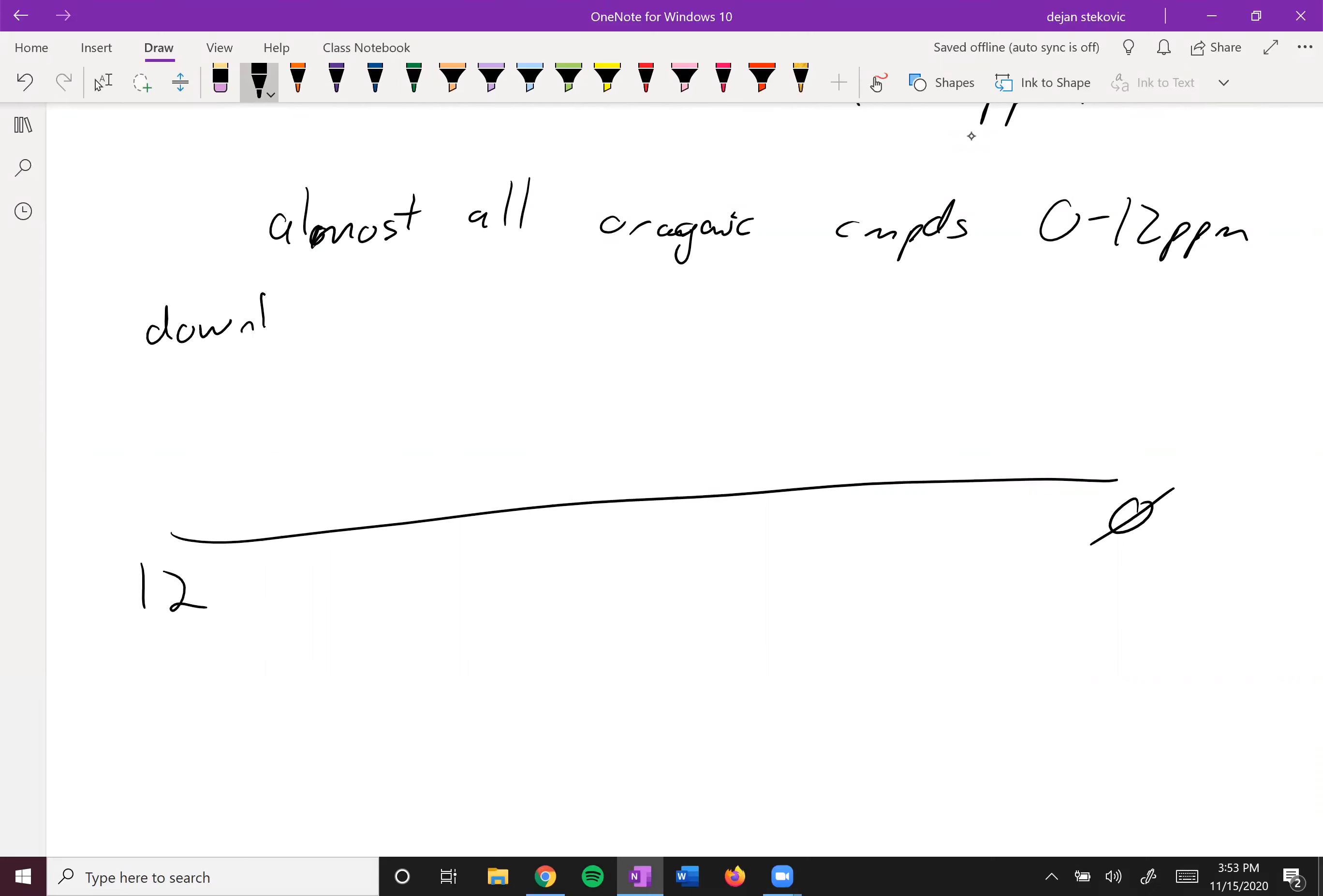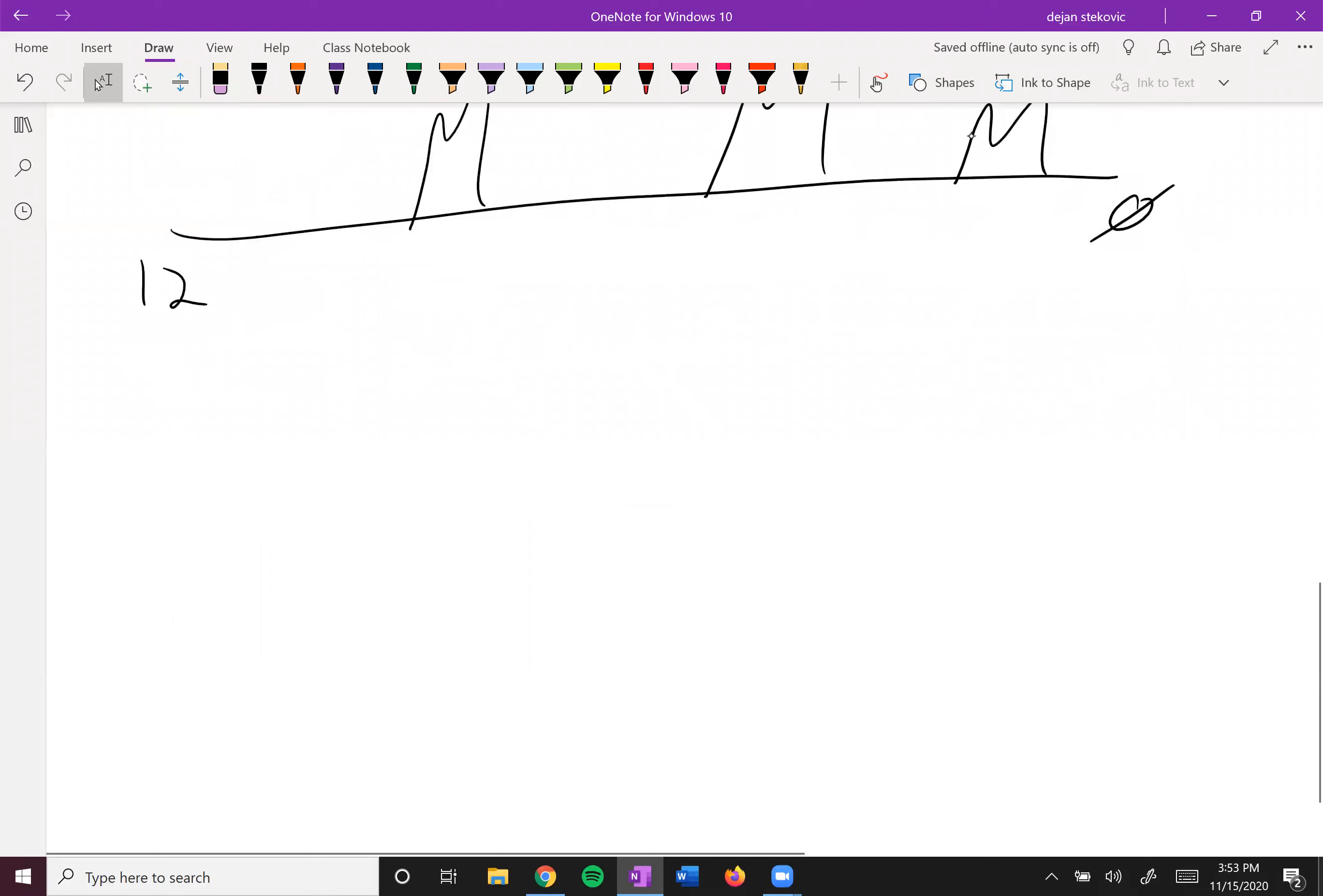This side over here would be downfield or deshielded. And this side up here would be upfield or shielded. And then we would have some kind of peaks randomly about depending on what kind of compound you have.